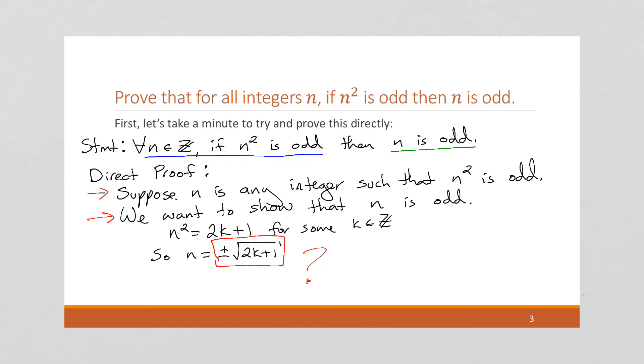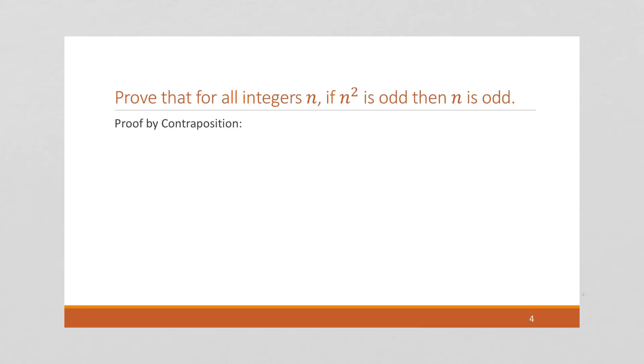Sometimes it doesn't work of always using a direct proof. Sometimes one type of proof is much easier than another type of proof. So we've got three proof types now in our bag of tools, and you always want to try to select the tool that's best for the problem, the proof type that's best for the problem. So it didn't work to do this directly.